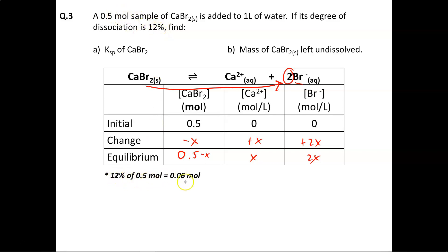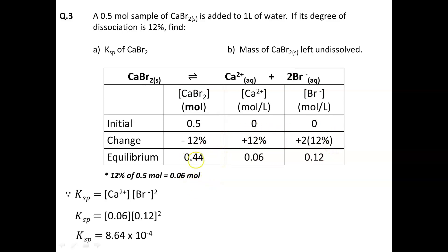Because the question says 12% will break up, we do 12% of 0.5, which equals 0.06. That means X equals 0.06. I can change my X values into 0.06, 0.06, and 2 times 0.06. That leaves us with equilibrium values of 0.44, 0.06, and 0.12, and we can substitute these values into our equilibrium expression.